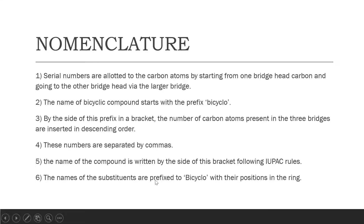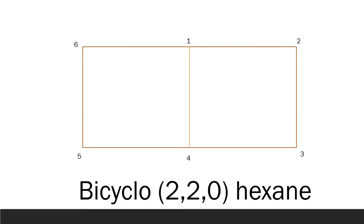The names of the substituents are prefixed to 'bicyclo' with their positions in the ring — meaning if there is any substituent attached to the bicyclic compound, it is written before the prefix 'bicyclo'. Now for the first example: the first and fourth carbons are the common bridgehead carbons and there are two rings attached, confirming this is a bicyclic compound.